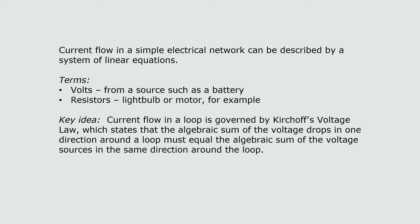There are some terms you need to know. Volts come from a source such as a battery, and resistors are things such as light bulbs or motors that use up the power. The key idea when setting up your system of equations is that current flow in a loop is governed by Kirchhoff's voltage law, which states that the algebraic sum of the voltage drops in one direction around a loop must equal the algebraic sum of the voltage sources in the same direction. In other words, we're not gaining or losing power in our loop.